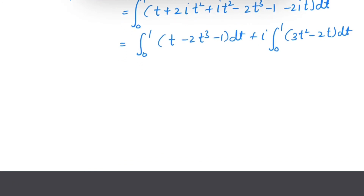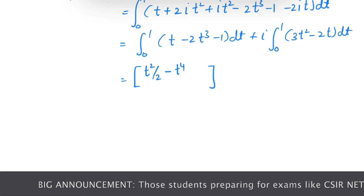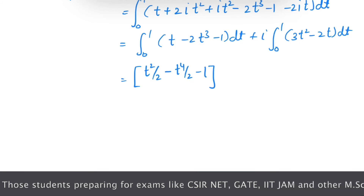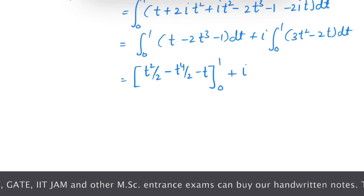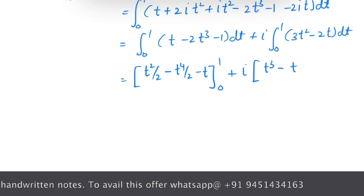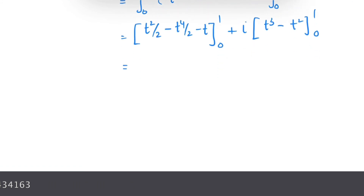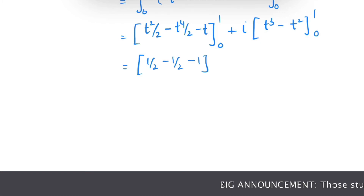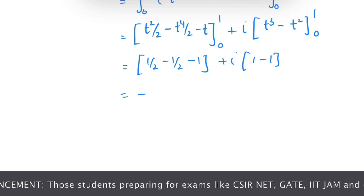Now let's integrate. The real part gives [t²/2 − t⁴/2 − t] from 0 to 1, and the imaginary part gives i·[t³ − t²] from 0 to 1. Putting in the limits: the real part gives 1/2 − 1/2 − 1 = −1, and the imaginary part gives i·(1 − 1) = 0.